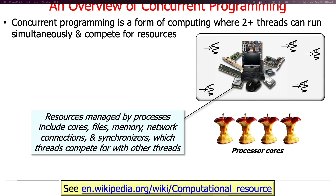The resources managed by a process include processor cores, various types of files in secondary storage, memory in primary storage, network connections from network adapters, and various synchronizers. These are all things that threads compete for with other threads within a process. You can think of an operating system essentially as a resource manager, and a process is one way of managing resources.